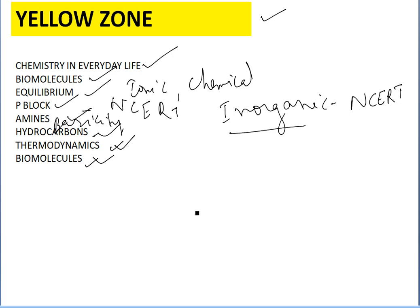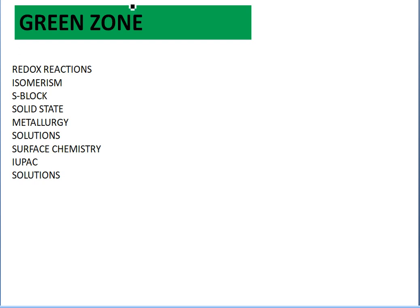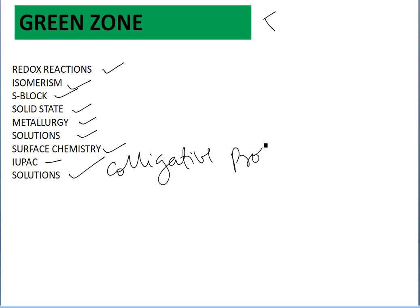Next is the green zone, which is less important but you still have to cover it — do not escape it. This includes redox reactions, isomerism, s-block elements, solid state, metallurgy, solutions, surface chemistry, IUPAC nomenclature, and colligative properties. In redox reactions, know how to balance using oxidation numbers. For isomerism, know structural and stereoisomerism with examples. In s-block elements, properties and reasoning questions are very important. Also cover solid state, metallurgy, solutions, surface chemistry, and IUPAC general organic chemistry naming.